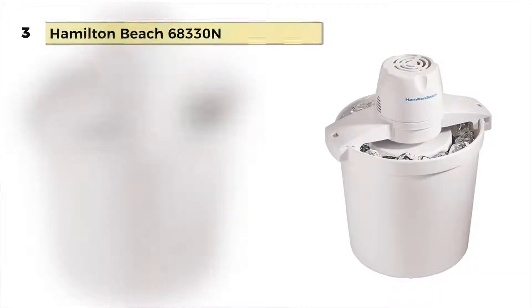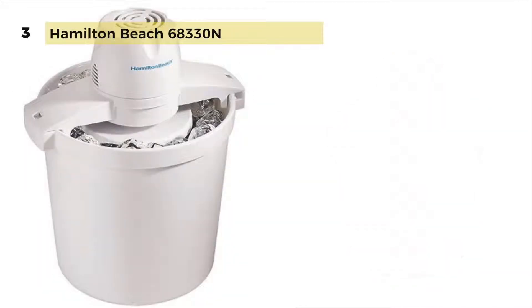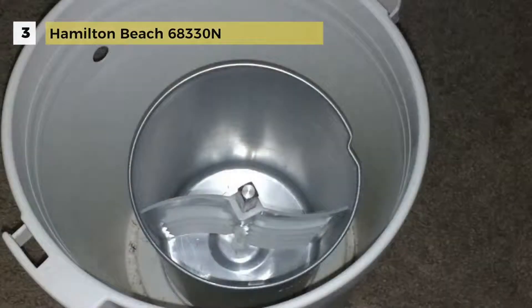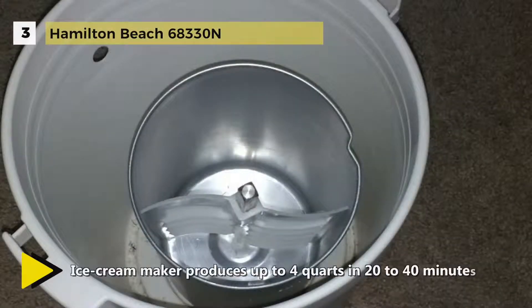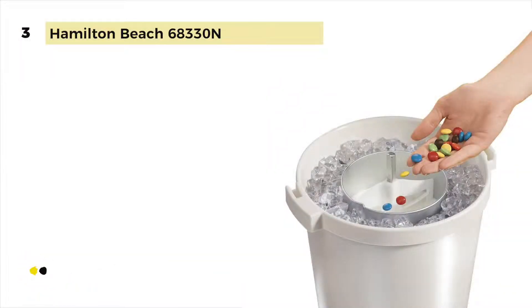Number three is the Hamilton Beach 68330N. This ice cream maker uses a classic bucket design and a high powered motor instead of a hand crank to make delicious homemade ice cream. Standing a foot tall and 13.4 inches wide, you can make up to a gallon of ice cream with this unit.